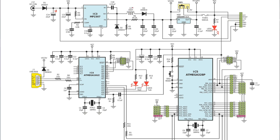Here we have coil L1 acting as a filter, and diode D3, along with a capacitor and ground. D3 is connected to this capacitor through the same wire. We also have resistors R6 and R5 with 10 kilohms, and another resistor with 44.2 kilohms.